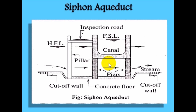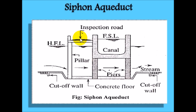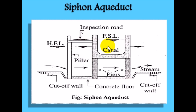There are different cross drainage structures such as aqueduct, siphon aqueduct, super passage, siphon super passage, level crossing, inlet and outlet. For the siphon aqueduct, selection is based on the high flood level and bed level of canal. A siphon aqueduct is selected when the high flood level of the drainage is greater than the bed level of the canal. In the figure, the high flood level is above the canal bed level, so a siphon aqueduct is provided. An inspection road allows for transportation purposes.